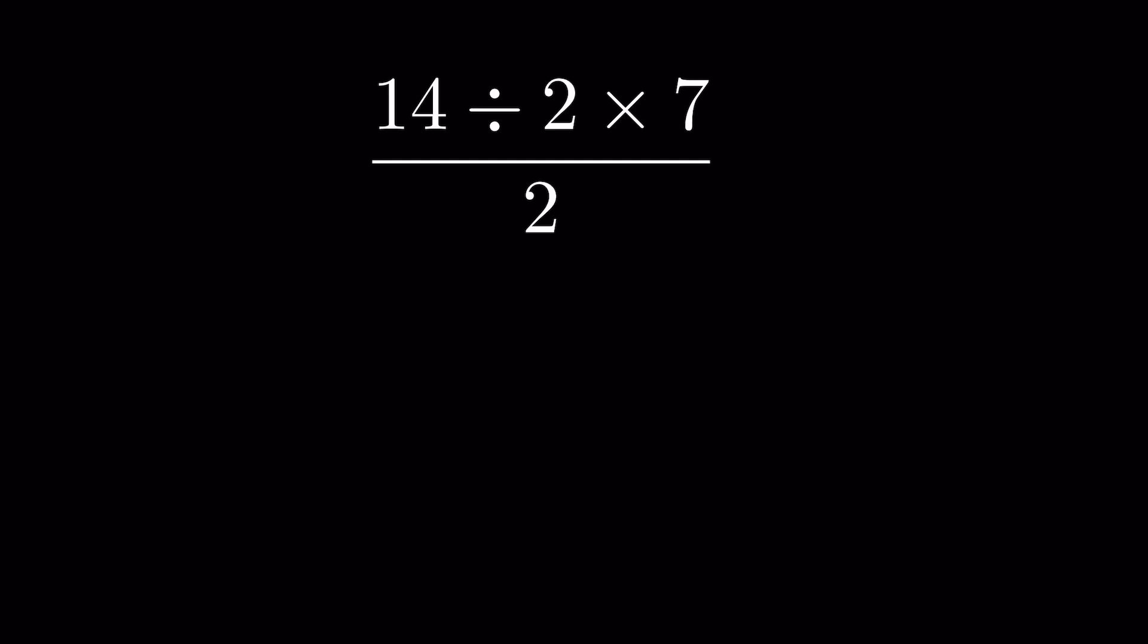14 divided by 2 times 7 upon 2. Can you tell me why students are making mistakes in this question? What is your answer? Let me know in the comment section. If it is 1 upon 2, then you are also making the same mistake. Here we have division and multiplication. Understand the basic thing about division and multiplication.